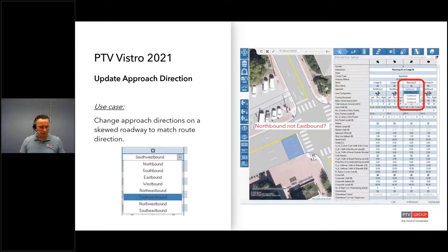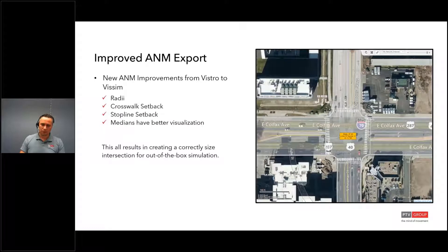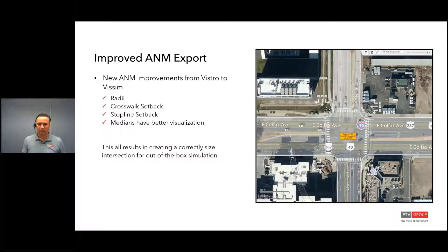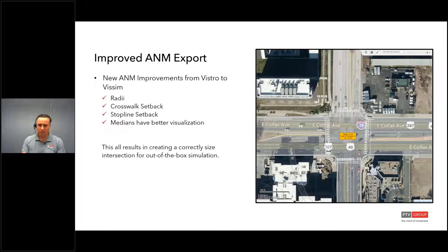Finally, we're going to show the improved ANMs. With the improved ANMs, many of the features I just discussed — like the radius, crosswalks, stop line setback, and medians — have better visualization within the VISM model. This creates really powerful out-of-the-box simulation capabilities directly from Vistro. It also makes a great sketch tool — you could take this to a public meeting and communicate the design quite effectively with the sketch coming from Vistro.